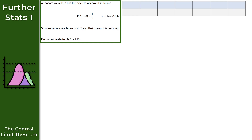Now let's look at question 2, where we have a random variable x which has a discrete uniform distribution. We're told that 50 observations are taken from x and their mean x bar is recorded. The question wants us to find an estimate for the probability that the sample mean x bar is greater than 3.8. The first thing to do is to set up this distribution in the form of a table — a probability distribution table for this discrete uniform distribution.